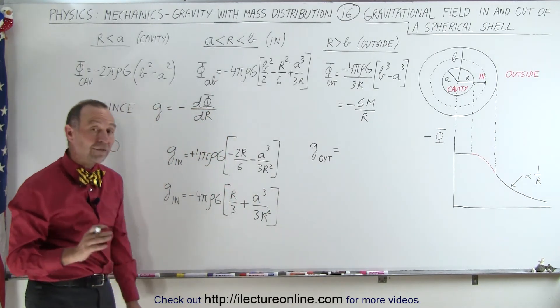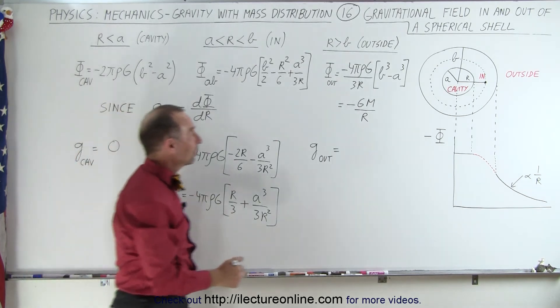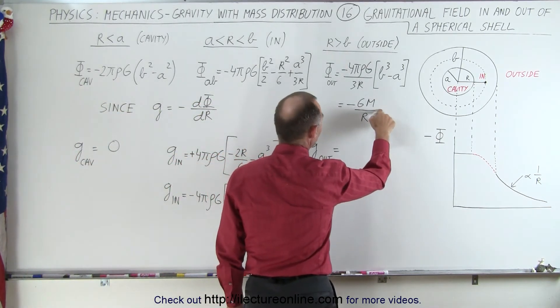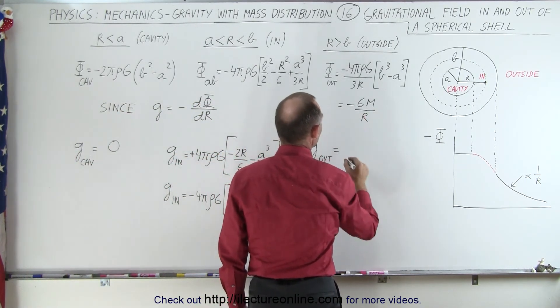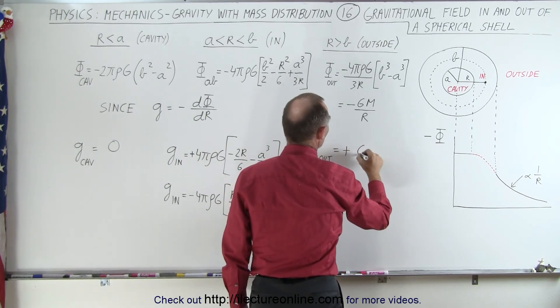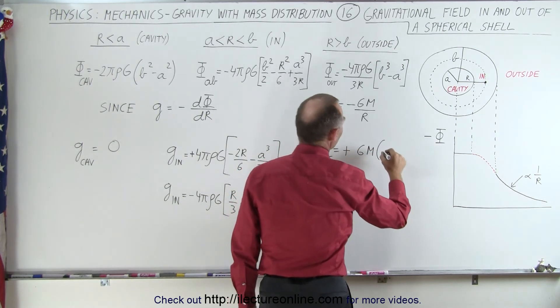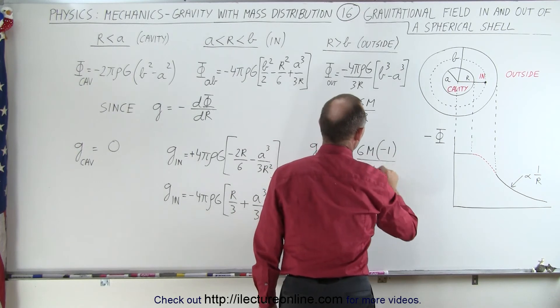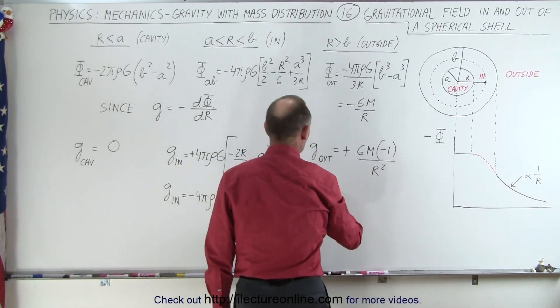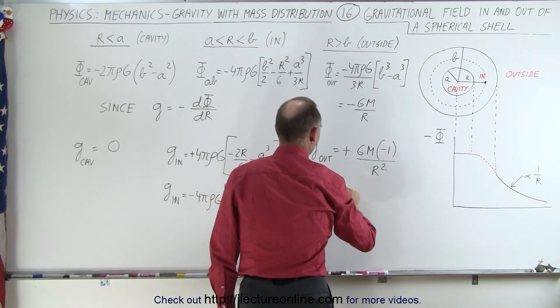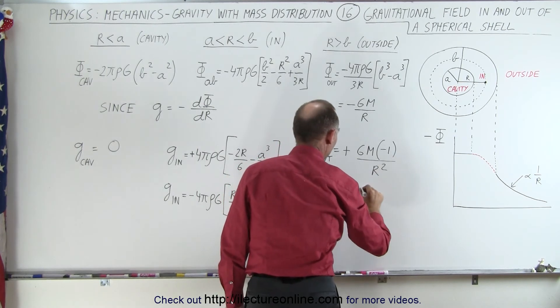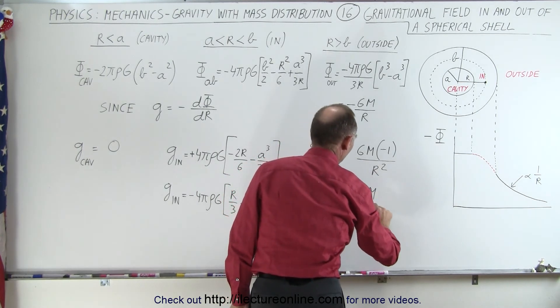And finally, the gravitational field outside the sphere, we simply take the derivative of this and multiply times the negative, so that would be plus gm times a negative 1 divided by r squared, or the gravitational field outside the sphere is going to be minus gm over r squared.